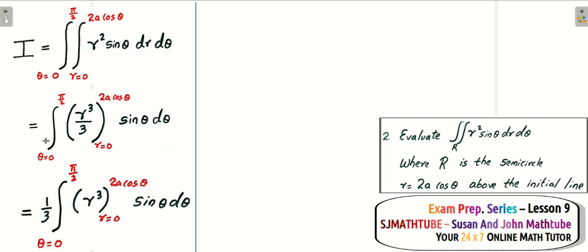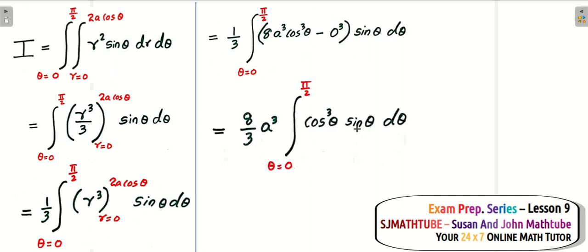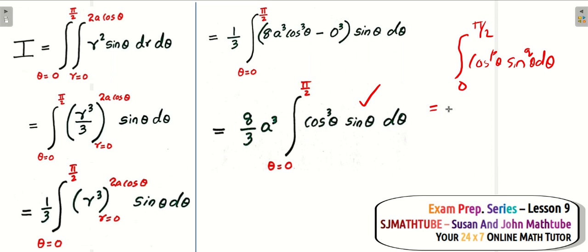Now 1 over 3 goes outside. Plugging in the upper limit minus the lower limit, we get a very familiar expression: the integral from 0 to pi over 2 of cos to the power p theta times sine to the power q theta d theta. In your first semester you likely learned about beta-gamma integrals, which are specially designed so you can easily evaluate integrals of this form from 0 to pi over 2 — whether it is cos to the power p theta, sine to the power p theta, or a combination. Beta-gamma functions make this evaluation really easy.